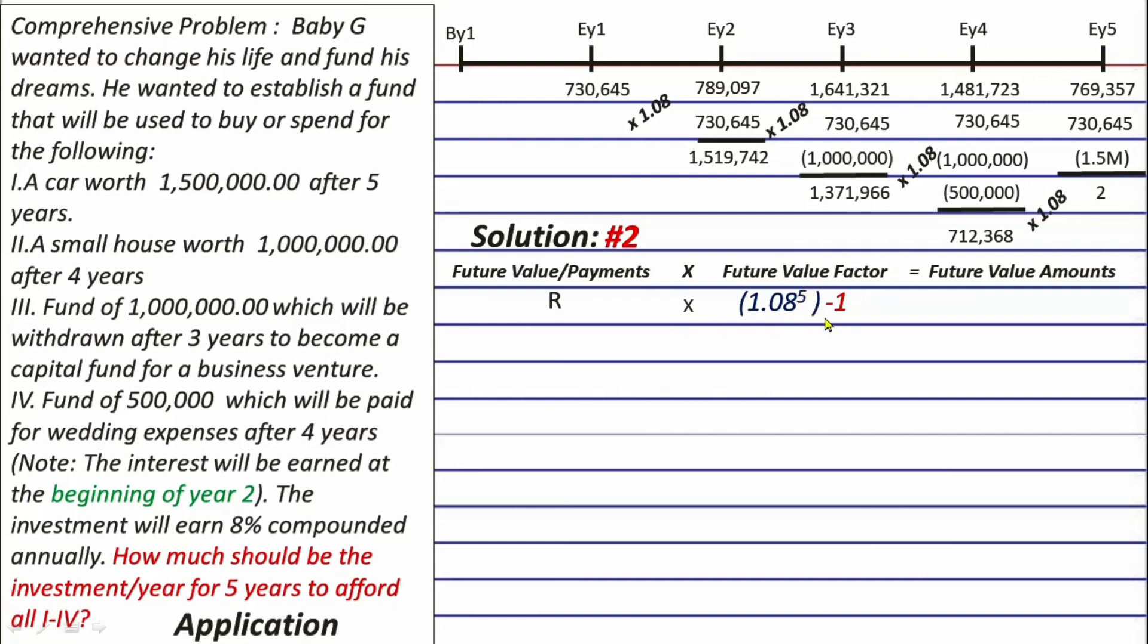Although, both of the future value of 1 ordinary annuity and the present value of 1 ordinary annuity, they should be divided by I. That's their similarity. Again, the future value ordinary annuity factor can be extracted using this 1.08 raised to the power of positive 5 minus 1 divided by 0.08. And actually, we will have a factor of 5.86660096 times R, which is equal to 5.86660096 R.